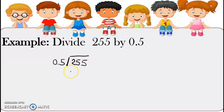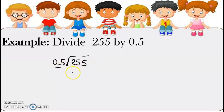So anong sabi natin kanina sa rule? Laging unang titignan is yung divisor, which is 5 tenths. So anong gagawin yung 5 tenths? Gawin natin siyang whole number by moving the decimal point to the right.